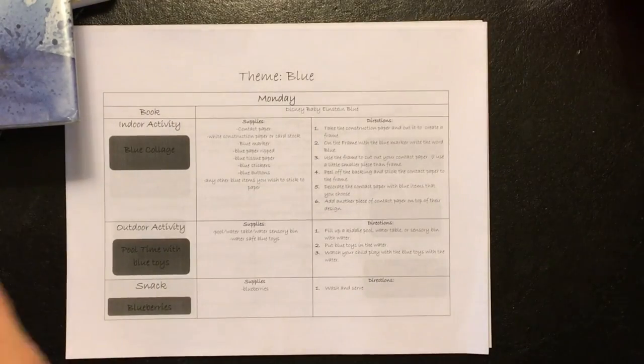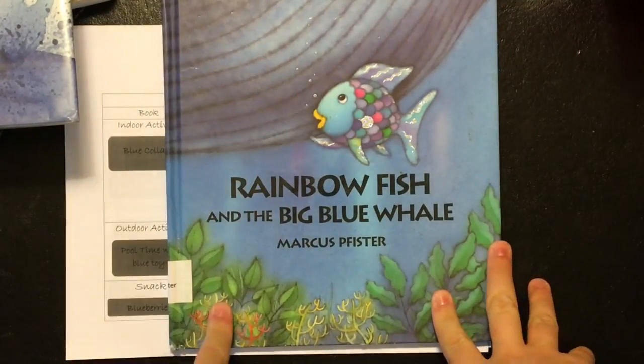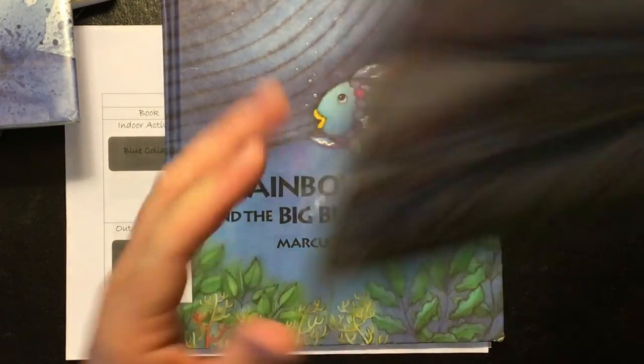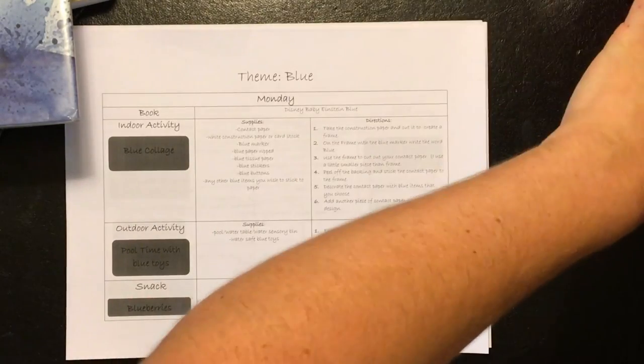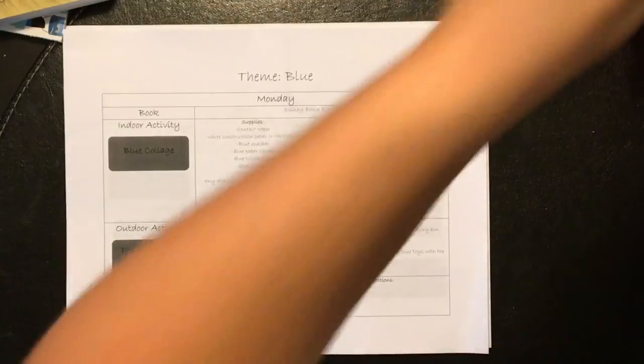I've added some extra books in there if I want to read to him these. Rainbow Fish and the Big Blue Whale, and then Blue on Blue. So these are the books that I plan on reading to him this week.